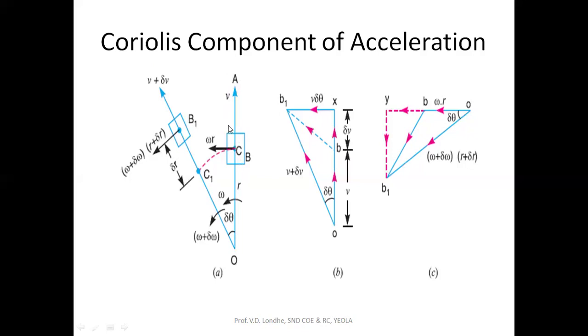Whatever the motion of the slider in upward direction is the slider velocity that is given by small v. These are the velocity polygons for the respective link OA. The trajectory of this point C is nothing but the point C on the slider B.